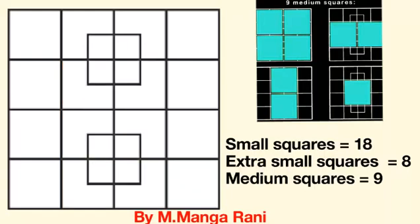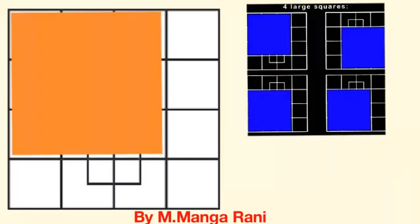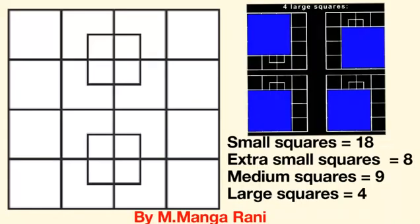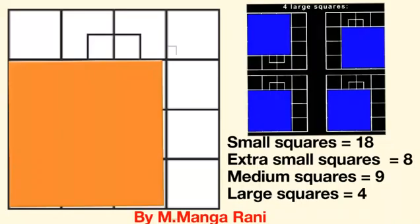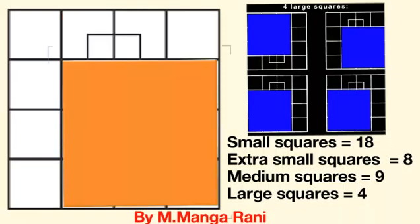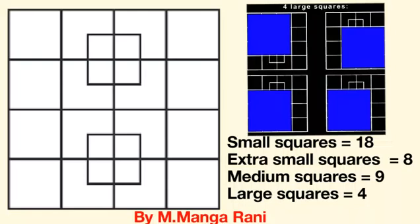For this, we are going to count large squares. 1, 2, 3, 4. Total large squares are 4.